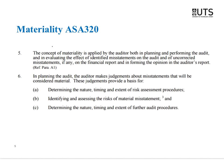ASA 320 — all of our ASAs in the 300s are about the planning stage. It says materiality is applied to the auditor in planning and performing the audit, and in evaluating the effect of identified misstatements on the financial report. In planning the audit, the auditor makes judgments about which misstatements are considered material. Thinking about misstatements will affect what sort of audit procedures we're going to do, how we identify risk, and if we find something, what we do next.